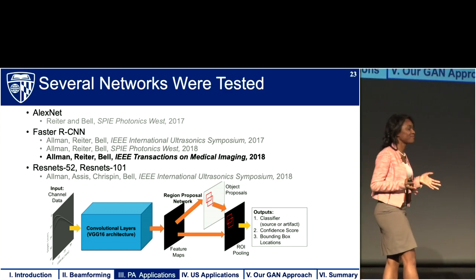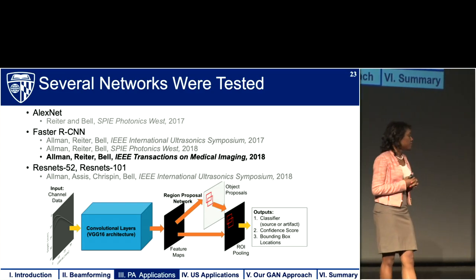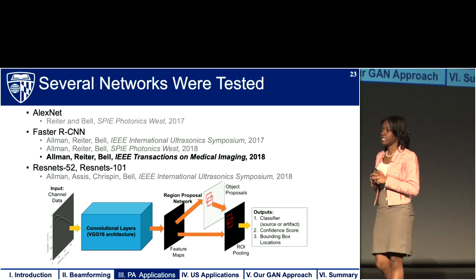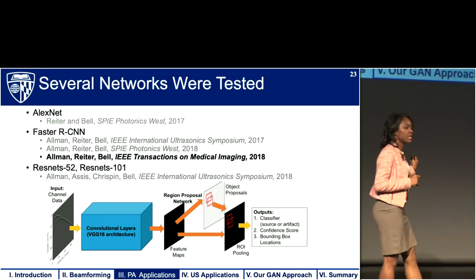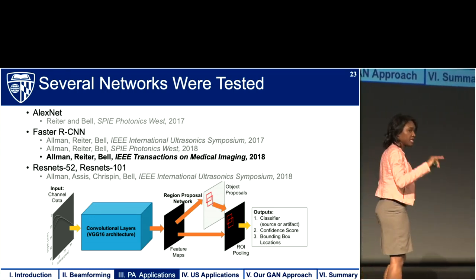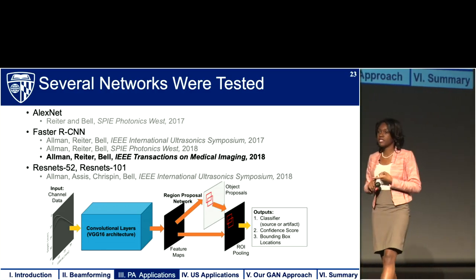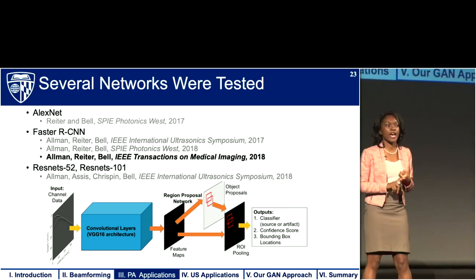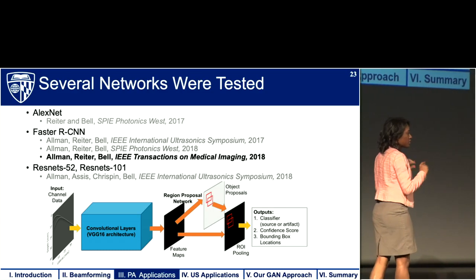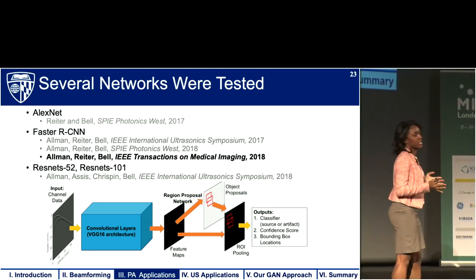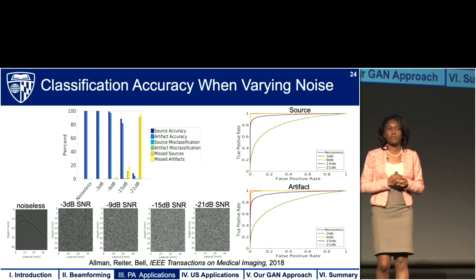Deep learning is not an exact science, so it required some trial and error, and several networks were tested. The one we settled on and published last year is the Faster RCNN network, published in IEEE Transactions on Medical Imaging. The network architecture inputs raw channel data sensed by the ultrasound transducer — first in simulation for training — and has three outputs of interest: first, a classification of the detected wavefront as a source or an artifact; second, a bounding box location telling us where the detected source or artifact is located; and third, a confidence score about the detection.